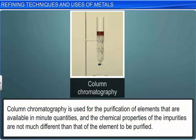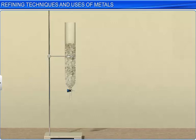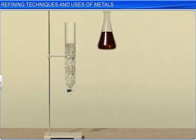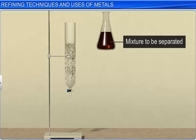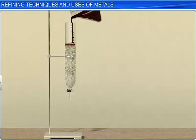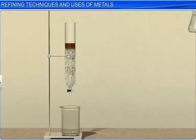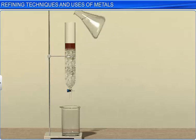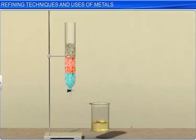In column chromatography, alumina or silica gel is packed in a column and serves as the stationary phase. The mixture to be separated is placed on the top of the column. A suitable eluent is allowed to flow down the column slowly. Depending upon the degree to which the components in the mixture are adsorbed, complete separation takes place.